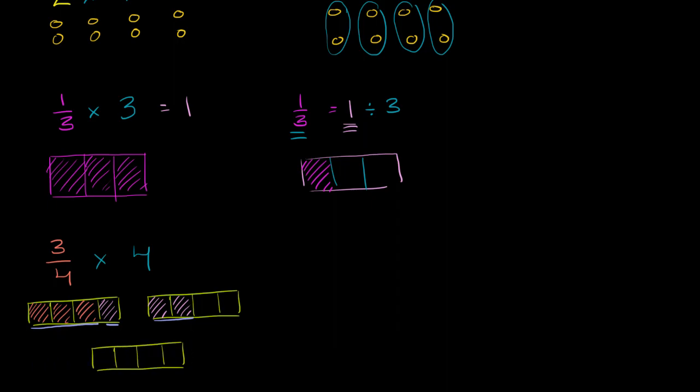And I will do that in this color. So my third 3 fourths. So here's a fourth. Here's my second fourth. Here's a third fourth. So in green I have another 3 fourths. And now we need 4 3 fourths.